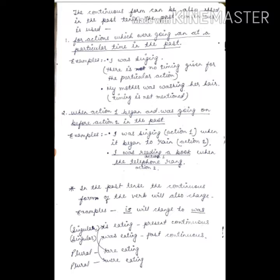Number two: when action one began and was going on before action two in the past. Let's see examples: 'I was singing' is action one, 'when it began to rain' is action two. These two are verbs - singing and rain. So the first action is 'I was singing,' and action two is 'when it began to rain.'